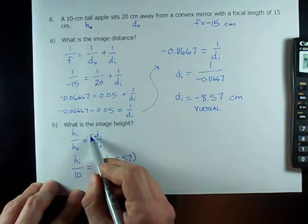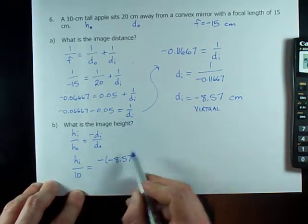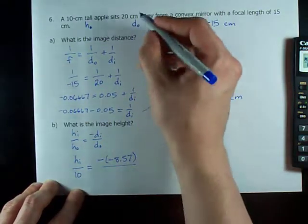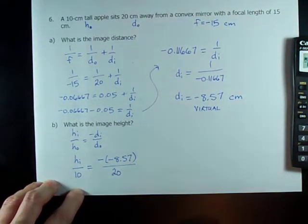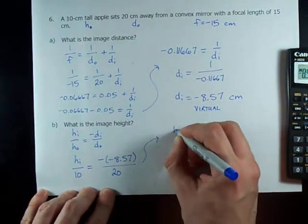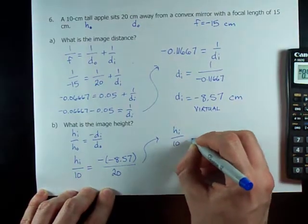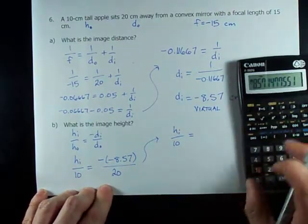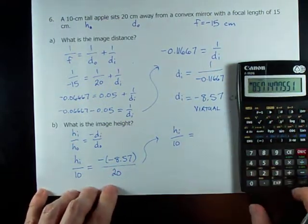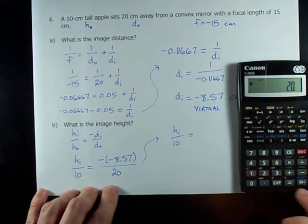The image distance is negative 8.57. Notice negative in the equation and negative for d_i. They'll cancel each other out. And d_o is 20. I've already run out of space. h_i over 10 is negative negative makes positive 8.57 divided by 20.